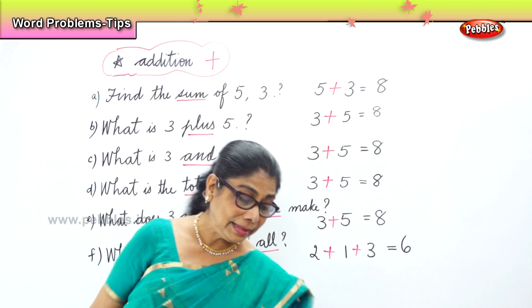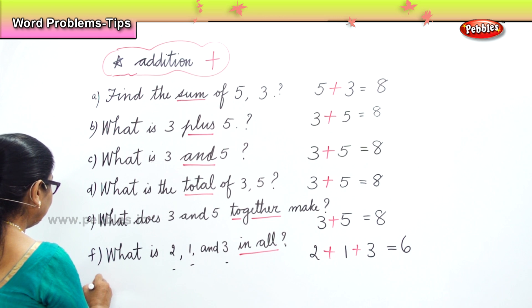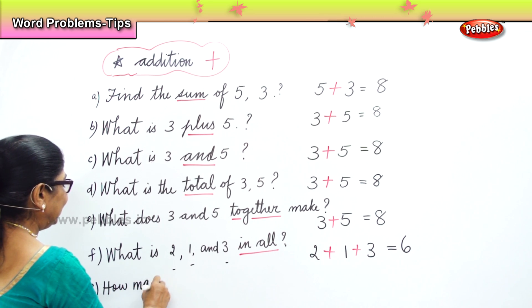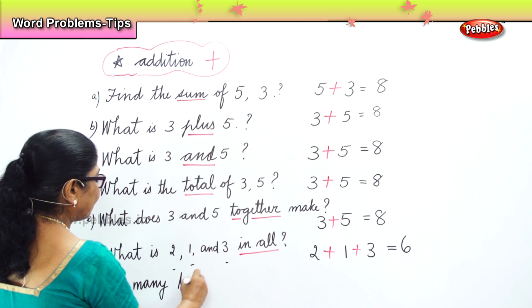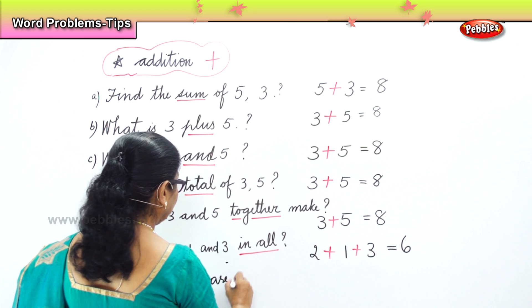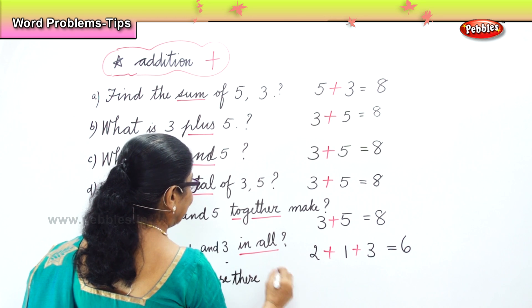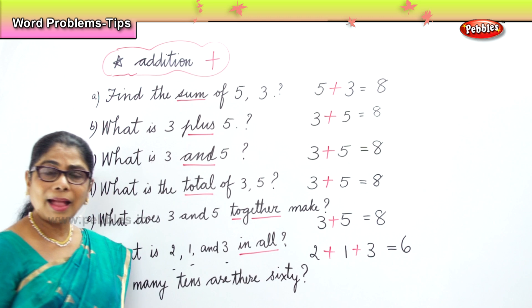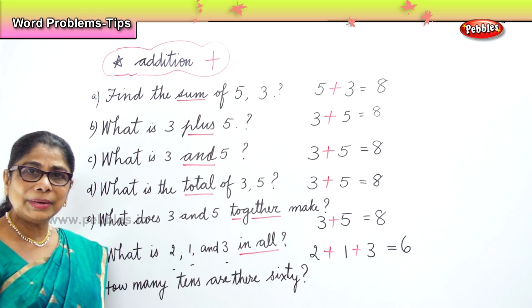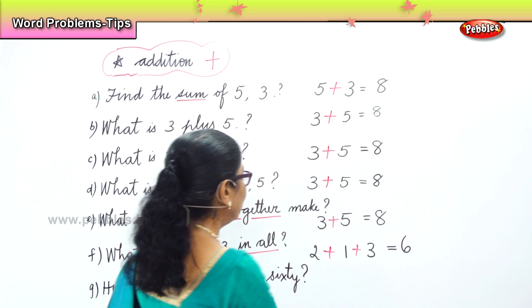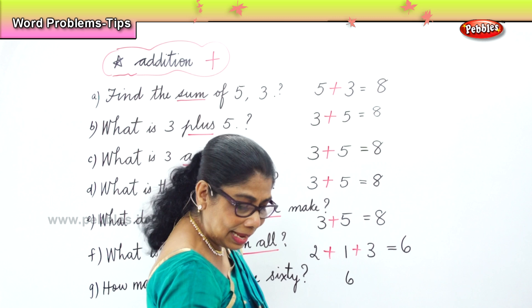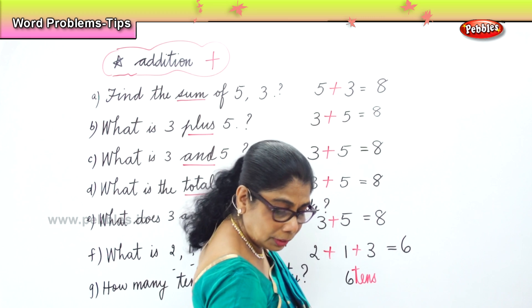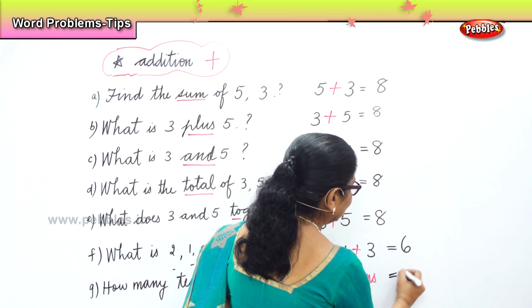How many tens are there in sixty? Six tens. How many tens? Six tens. You have six tens. What is six tens? Six tens equal to sixty.